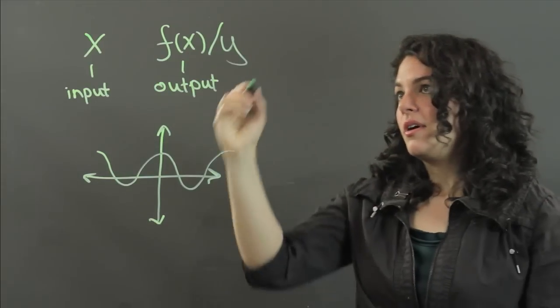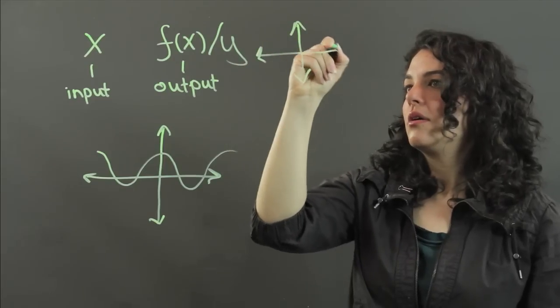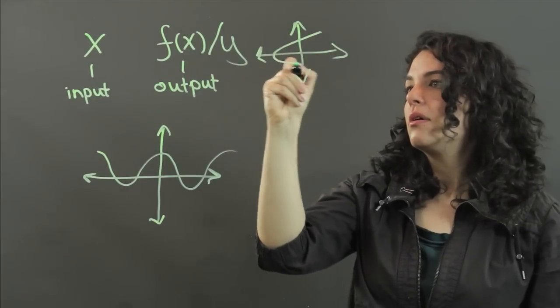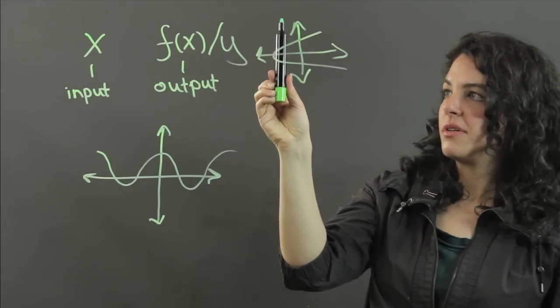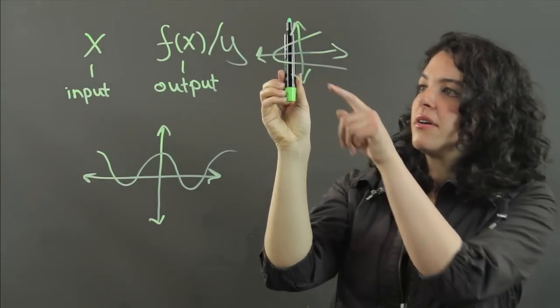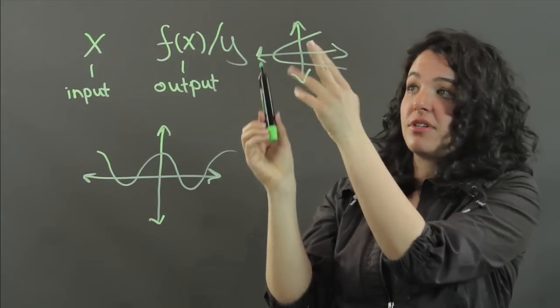I could have a function that looks like this, and when I do that, and I pass my vertical line through it, here it's hitting two values, two y values. So this is not a function.